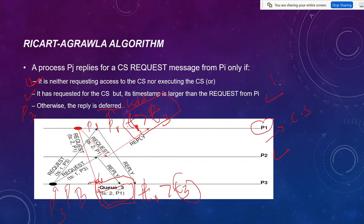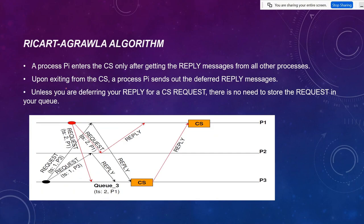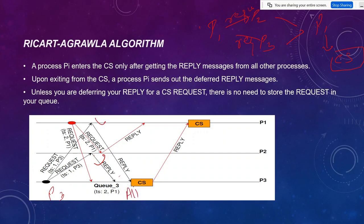These three conditions determine how a process replies. Next, process Pi enters the critical section after getting a reply from all processes. As told earlier, P1 sends a reply to P2 and P3, and after getting all replies P1 goes to the critical section. Similarly, P3's request goes out, it gets a reply from P2 and a reply from P1, and so after getting replies from the remaining two processes, P3 goes to the critical section.